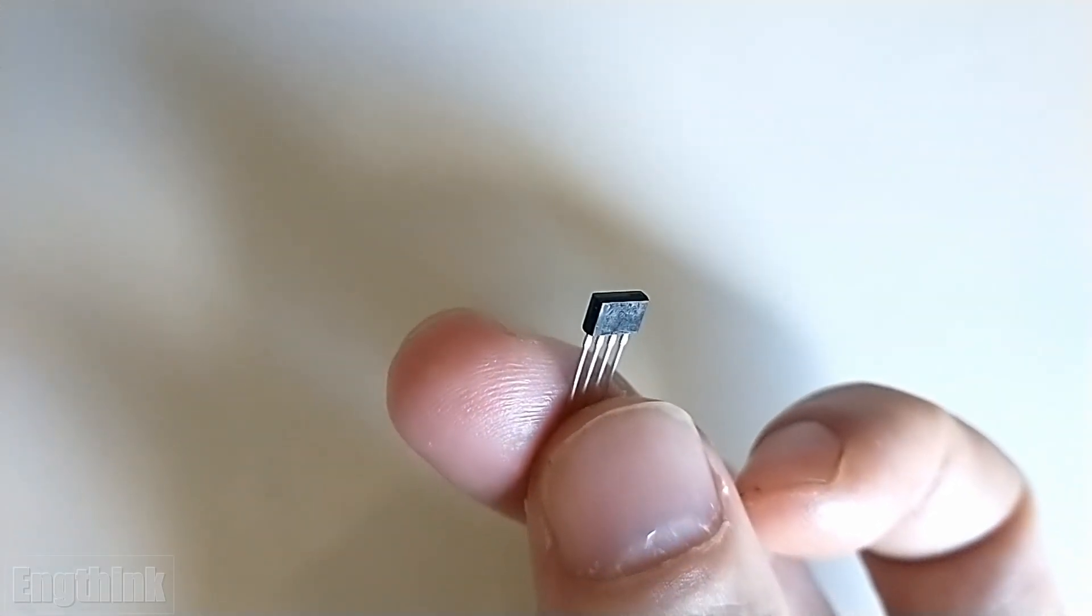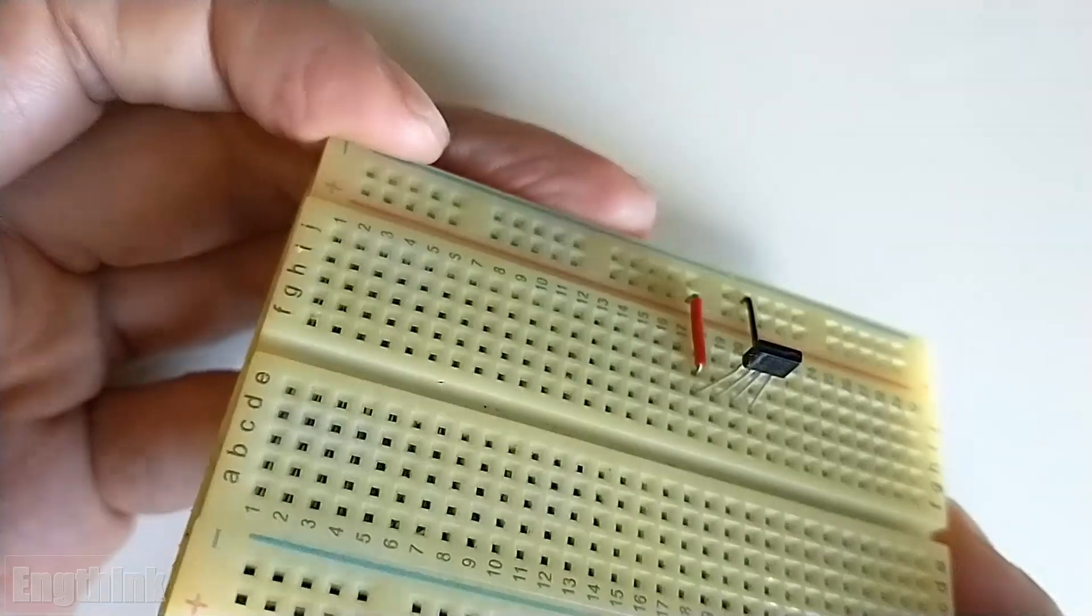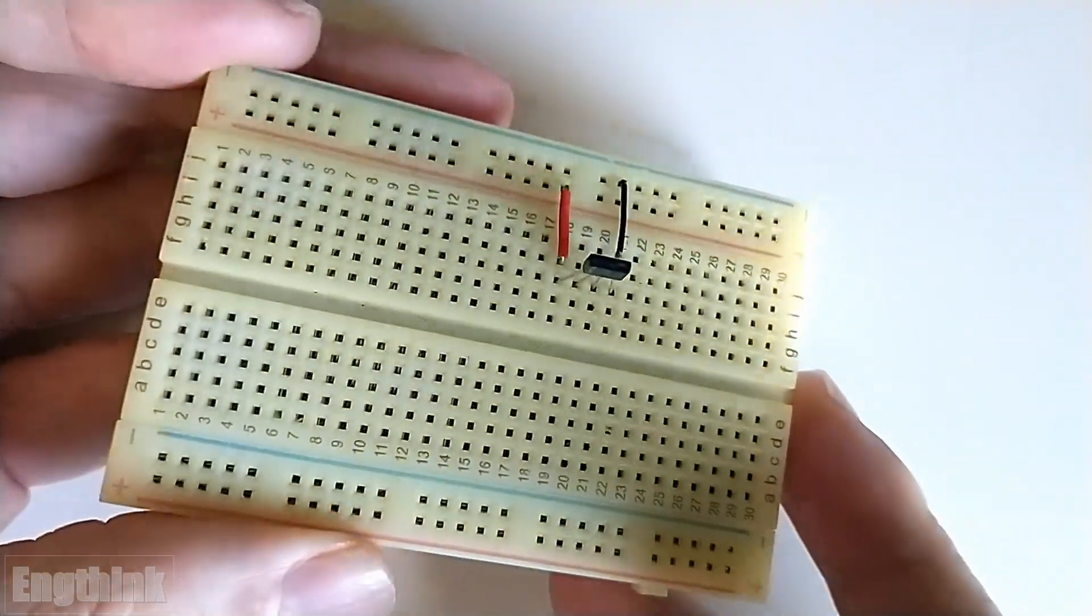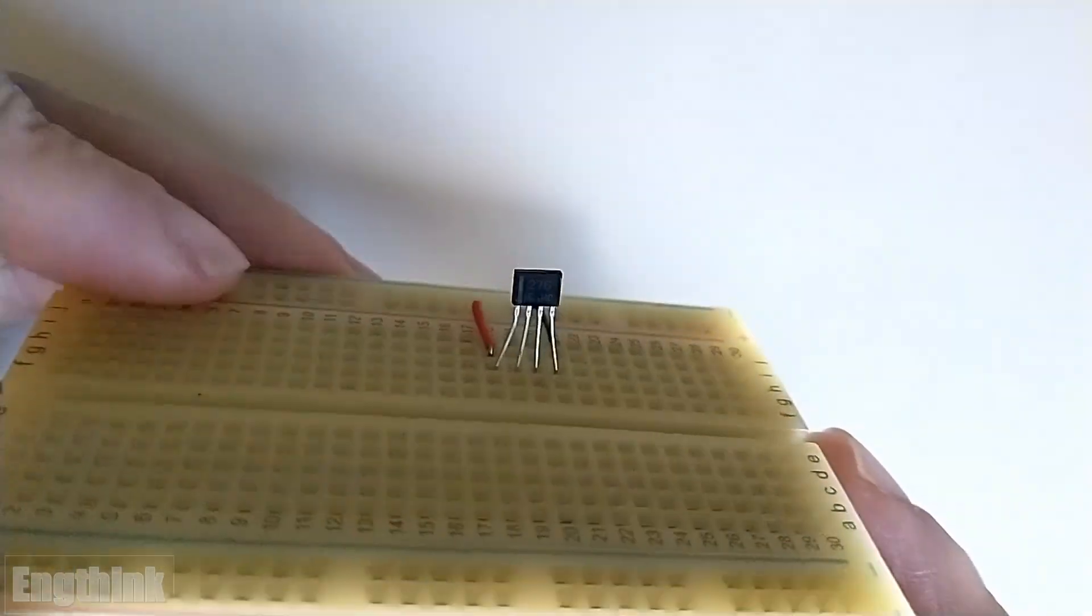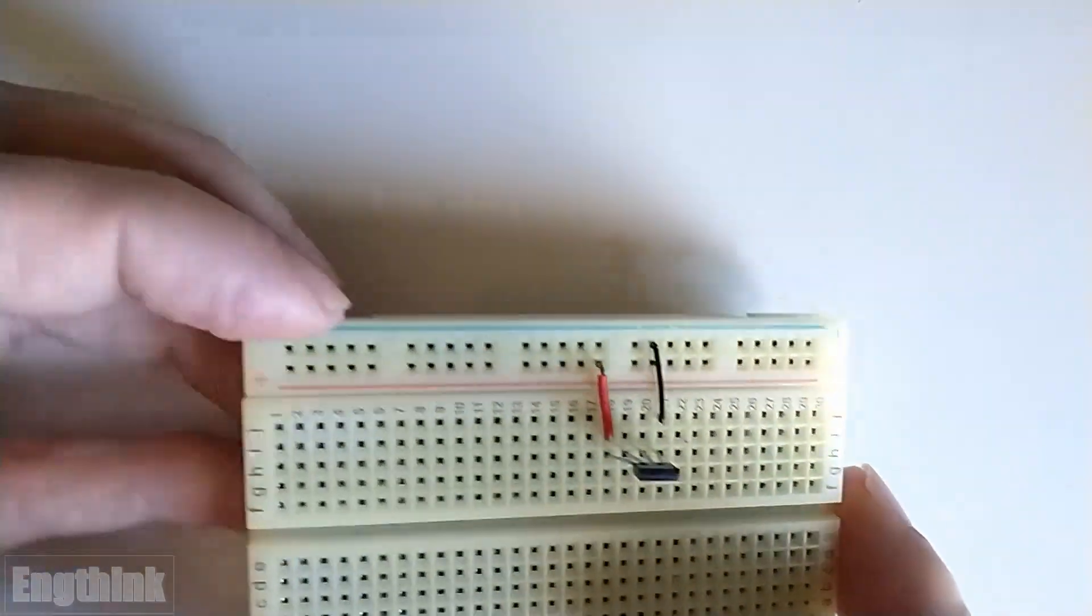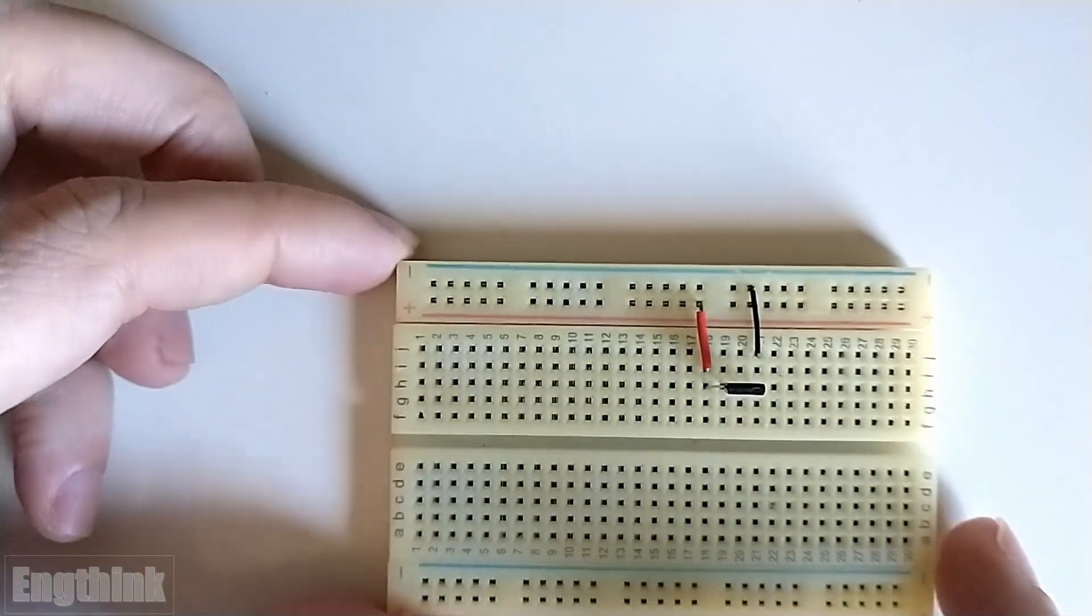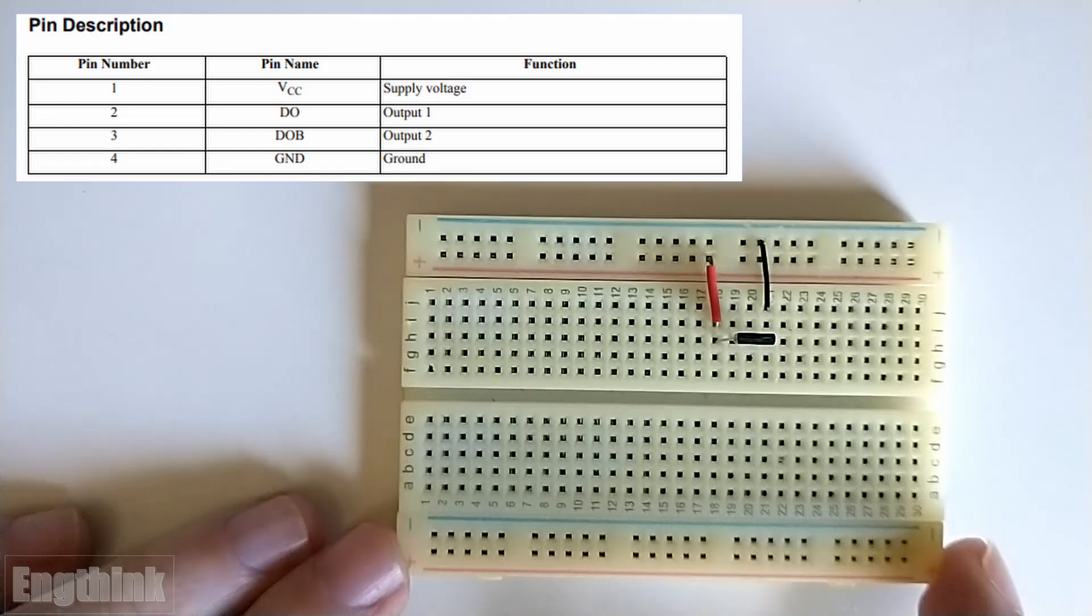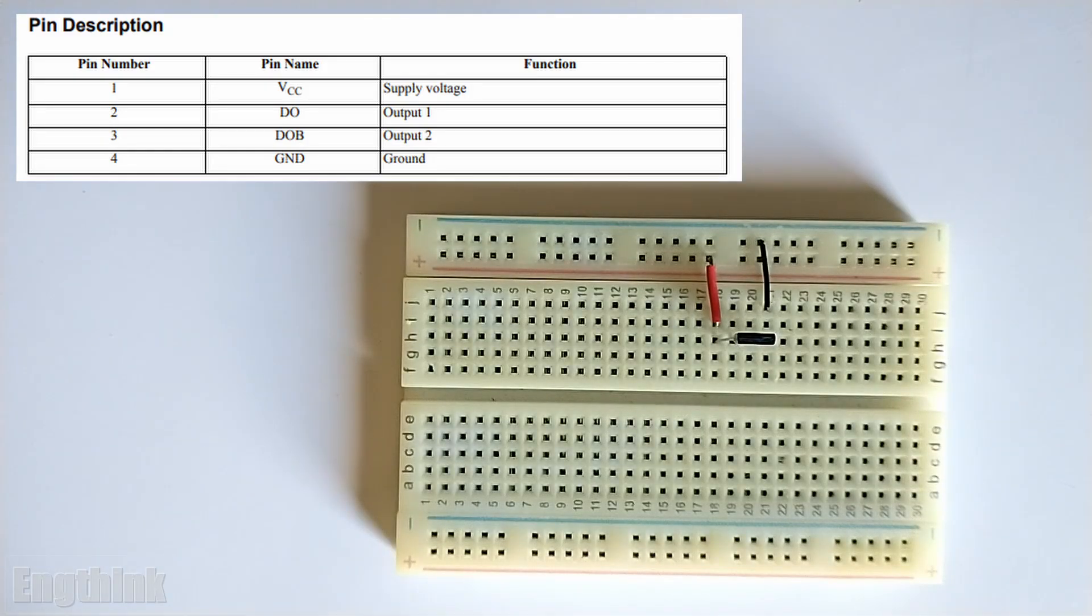As you can see, I already have mounted in the breadboard the Hall Effect sensor. And to proceed with the connections, we need to check the datasheet regarding the pin number and pin name, and as well, the function of each pin. With this table it's much easier to proceed with the connections in the breadboard.